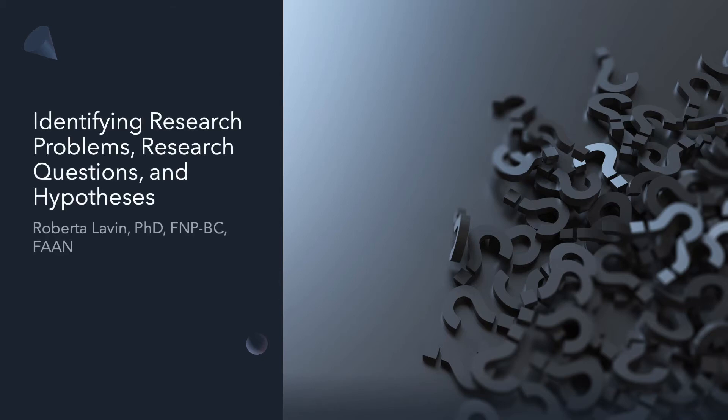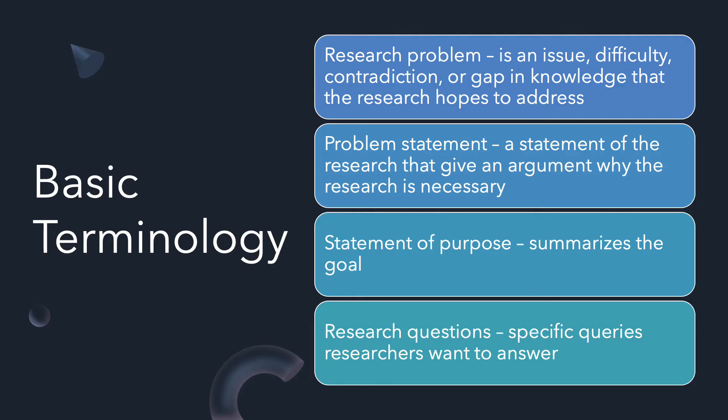The last chapter we will discuss this week is Chapter 5, Identifying Research Problems, Research Questions, and Hypotheses. Let's begin this chapter by reviewing some important terminology and distinctions in terms. A research problem is an issue, difficulty, contradiction, or gap in knowledge that the researcher hopes to address.